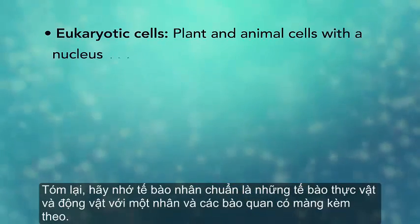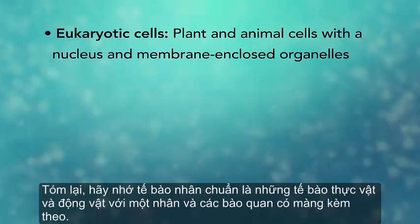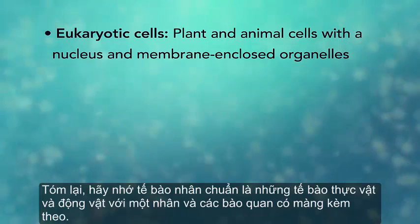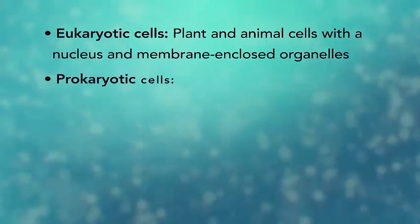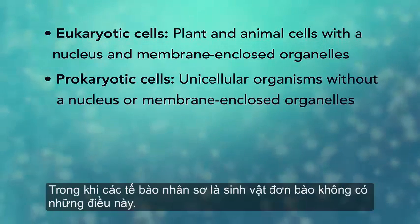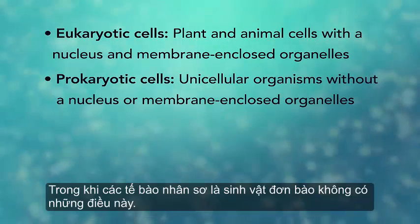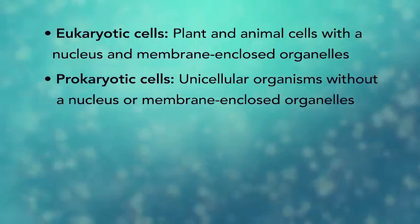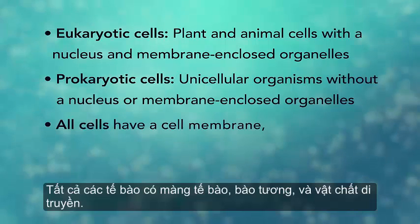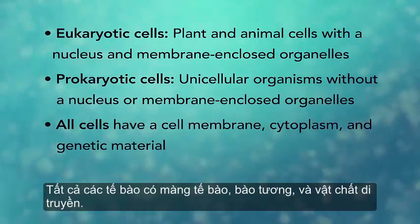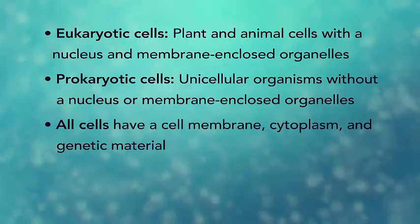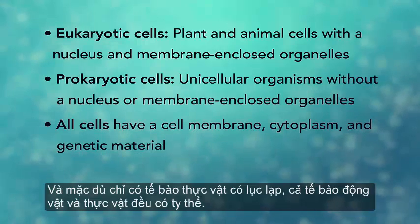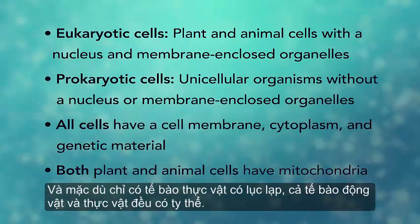In summary, eukaryotic cells are plant and animal cells with a nucleus and membrane-enclosed organelles, while prokaryotic cells are unicellular organisms without these things. All cells have a cell membrane, cytoplasm, and genetic material. And even though only plant cells have chloroplasts, both plant and animal cells have mitochondria.